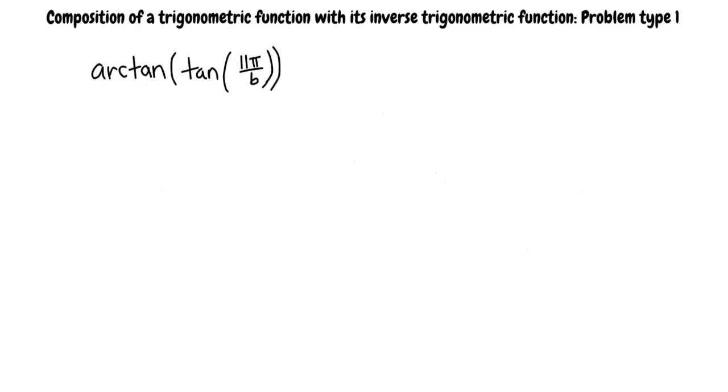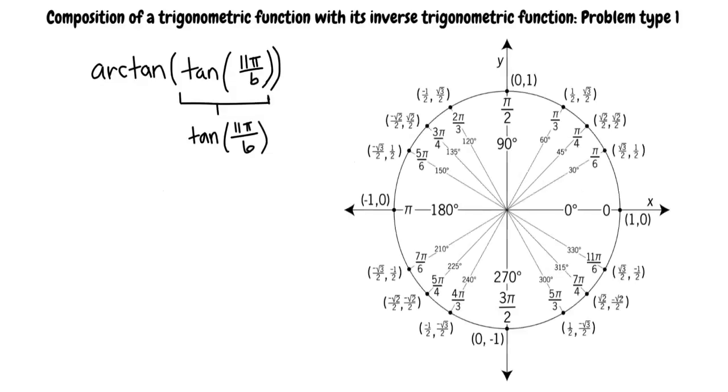We will start with the function within the parentheses. Tangent of 11 pi over 6. We may reference the unit circle and look at the angle 11 pi over 6. Most unit circles don't include the tangent values, but that's okay because we can calculate it.